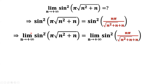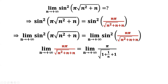This is our expression, and we want to find the limit. We want to find the limit of the inside part: the limit of pi times n divided by square root of n squared plus n, plus n, as n goes to positive infinity.